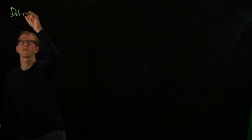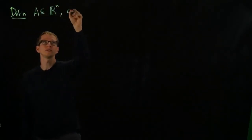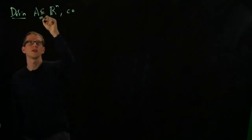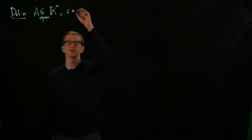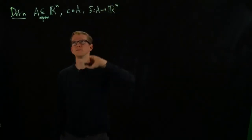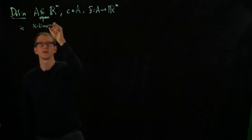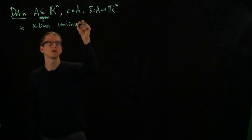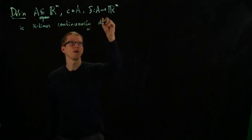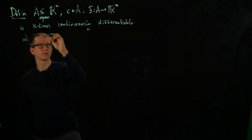The assumptions in the previous theorem are so important that they merit having their own definition. If I have a domain A in R^n, an open domain, a point C in A, and a function F defined on A to R^m, such a function is k-times continuously differentiable at C if and only if the following conditions hold.